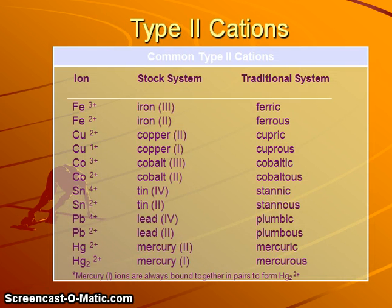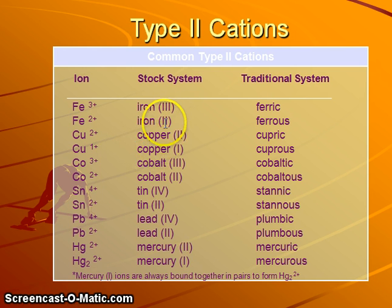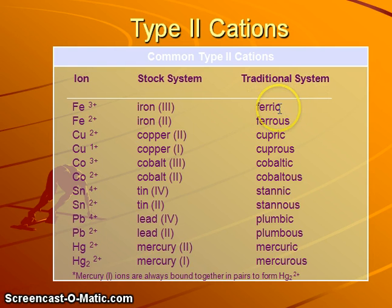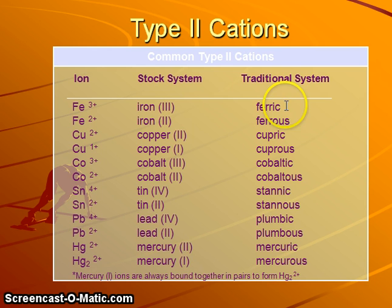Type two cations are examples of elements where there's more than one possible charge when they form ions. For example, iron can form either a plus three or a plus two ion. Copper can form plus two or plus one. The stock system uses roman numerals to indicate the charge. Iron with a roman numeral three indicates it's the positive three charge; iron two indicating positive two. Or the Latin system — the traditional system — uses the Latin name ferrum for iron. The -ic ending is always going to be associated with the higher charged ion. The -us ending is associated with the lower charged ion.